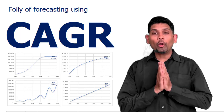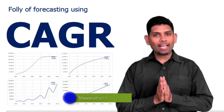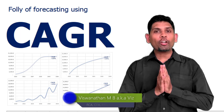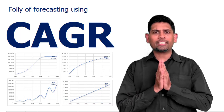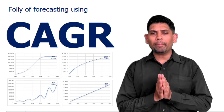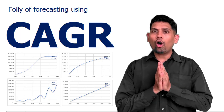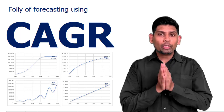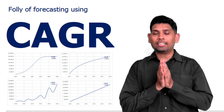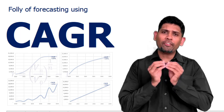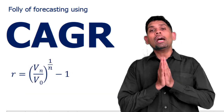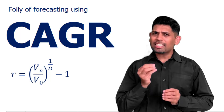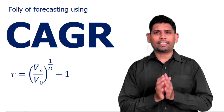In this episode I'm going to be talking about the follies of forecasting using CAGR — compounded annual growth rate. If you're a finance professional you most likely already know what CAGR is: it is simply the geometric mean of the annual growth rate of a variable. I'm not going to focus on how to calculate CAGR, but specifically on the issues when it comes to using CAGR for forecasting.